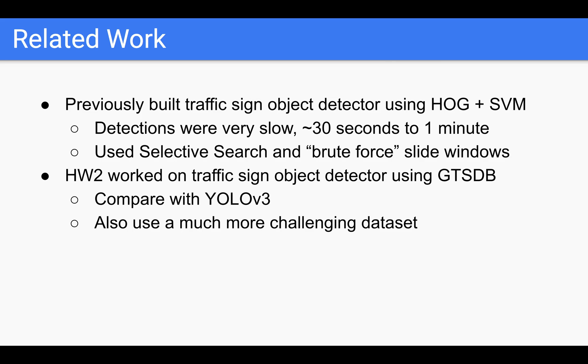However, this particular type of model was plagued by very slow performance. Detections in general took anywhere between 30 seconds up to a minute. Large part of this is due to the use of either selective search or brute force sliding windows approach. For homework 2, I actually worked on a traffic sign object detector as part of the computer vision track, but I used a much simpler dataset, specifically GTSDB or German traffic sign detection benchmark, which actually only had 900 images compared to LISA. I wanted to expand upon that work and compare the performance of Faster RCNN with another state-of-the-art object detection algorithm, specifically YOLO V3.